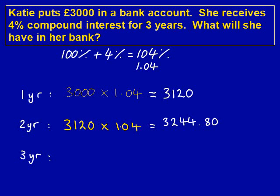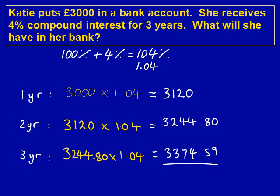We now repeat for the third and final year. We start with £3,244.80 and multiply it by 1.04. Type this in on a calculator. This gives us the answer of £3,374.59. We've rounded this to two decimal places because money has two decimal places. Therefore, after three years at 4% compound interest, Katie will have £3,374.59 in her bank. We've now got three marks.